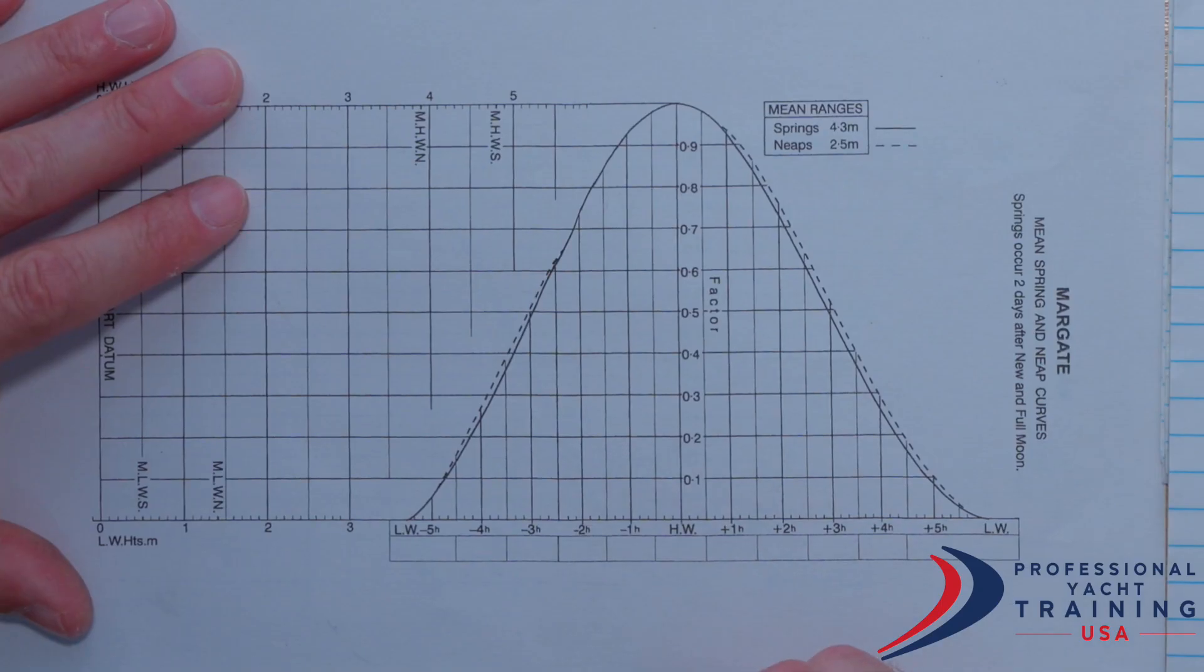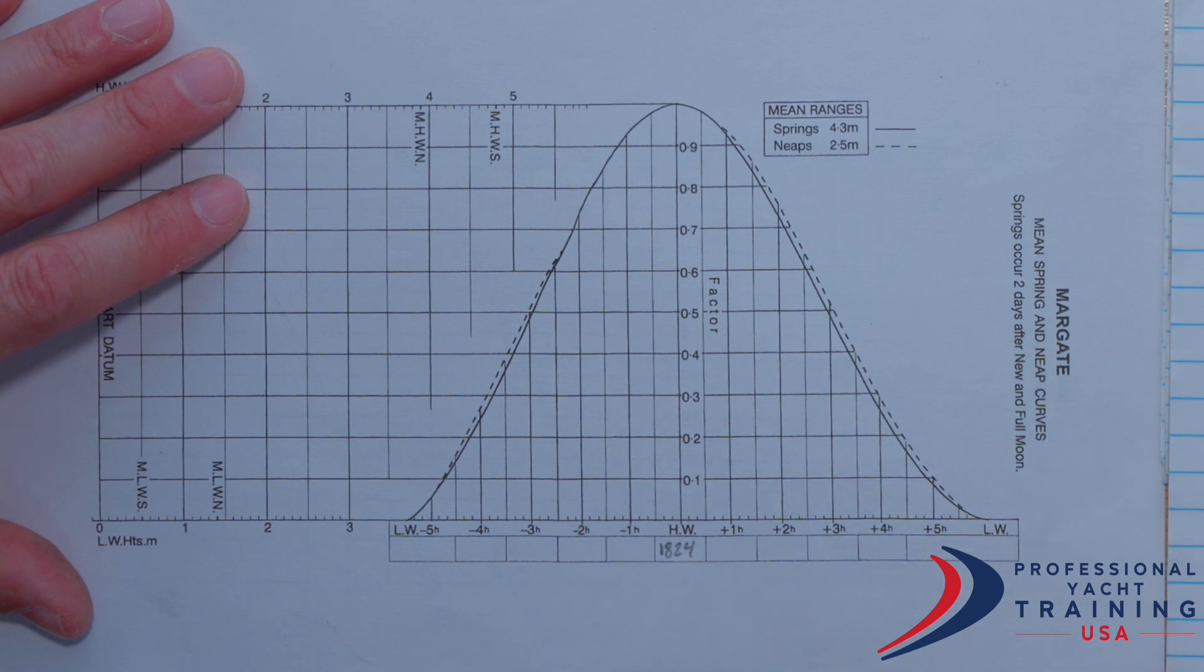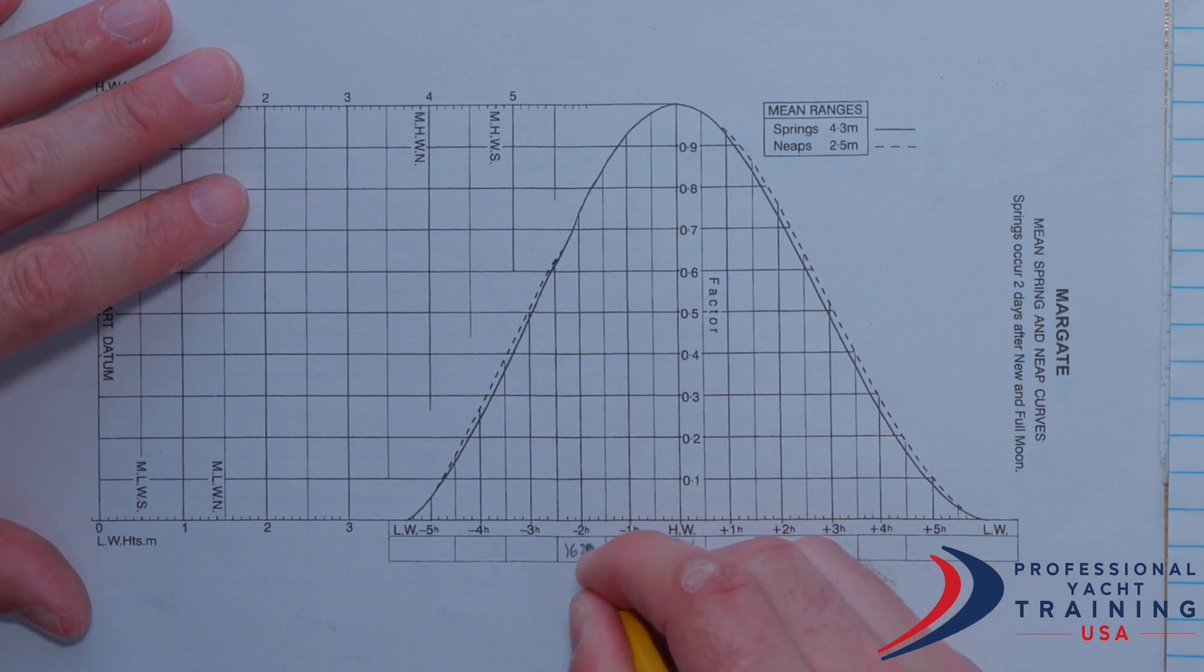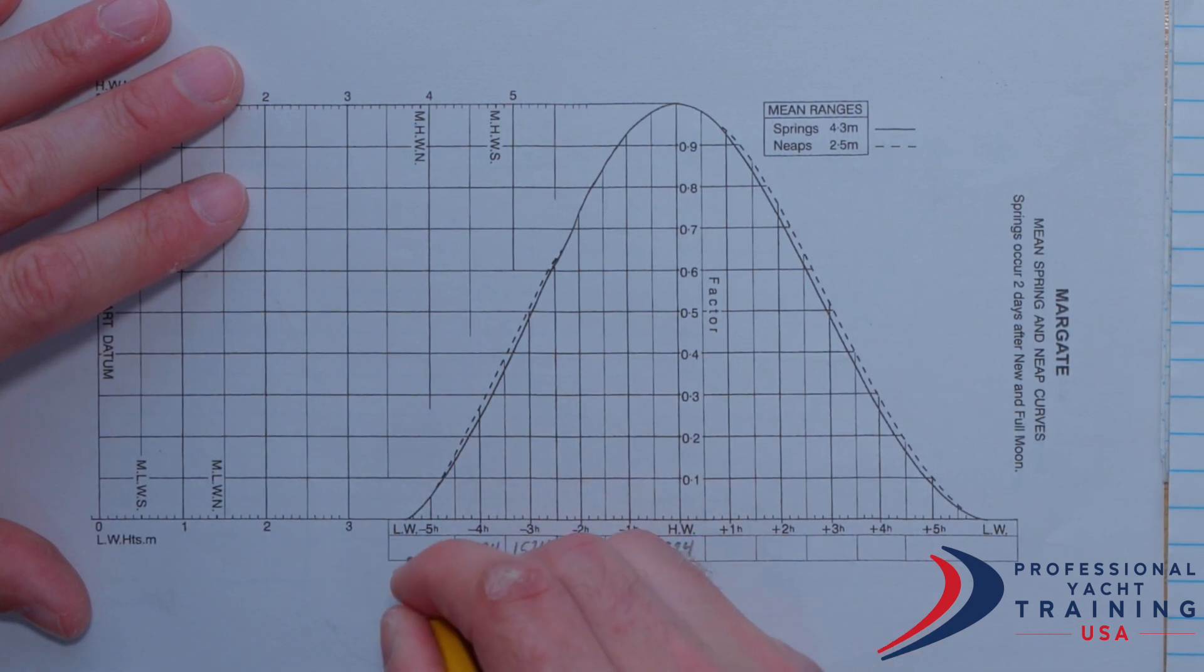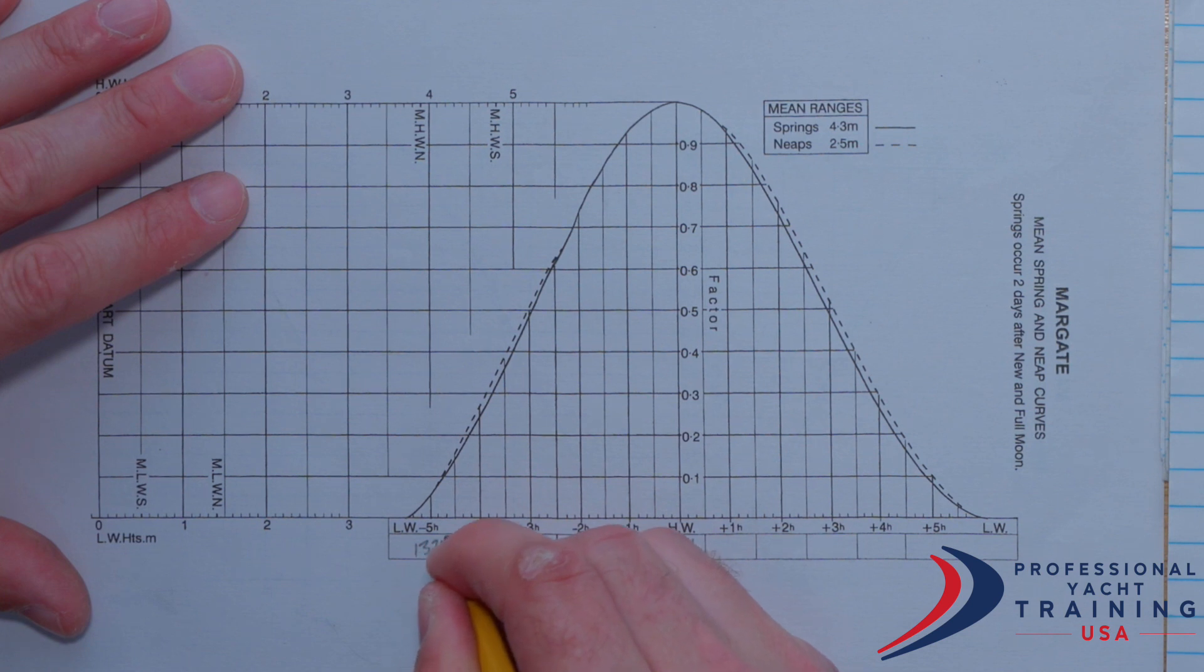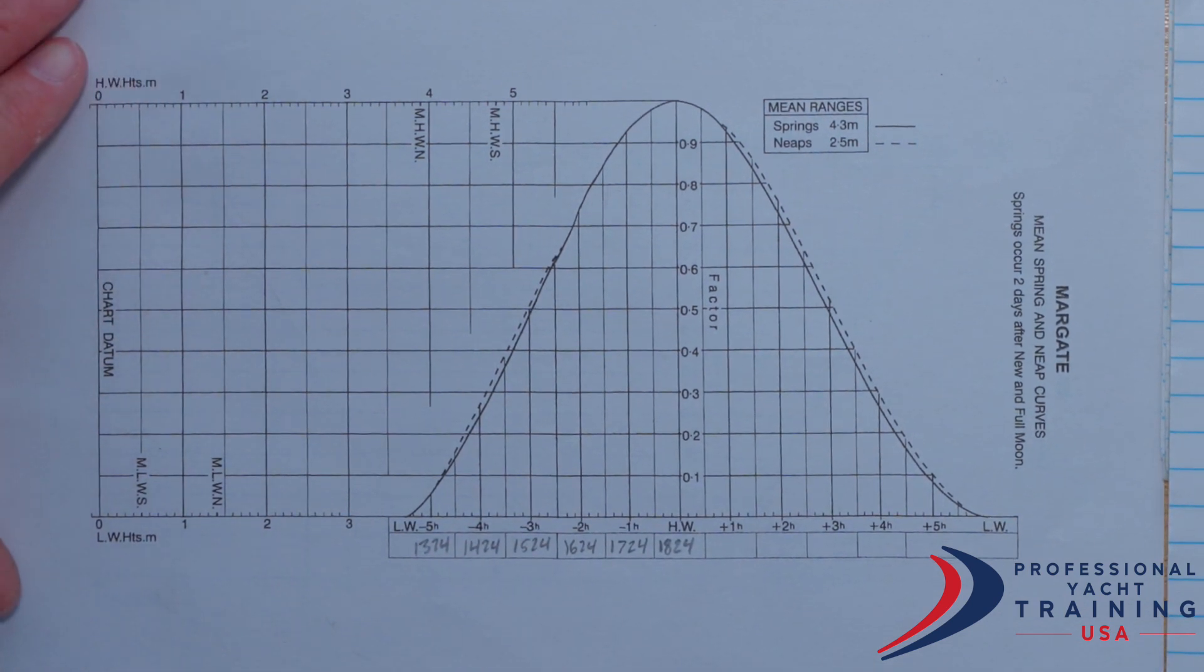And so all I need to do to solve part C is work with my tidal table once more. Now, since this is a rising tide, I'm going to start with the high tide time, which is 18:24 right here in the middle. And I'm going to work backwards by hour increments until I reach the time of the previous low water. That should put me pretty close to my previous low water. Close enough. And we're always going to start with that high water time.